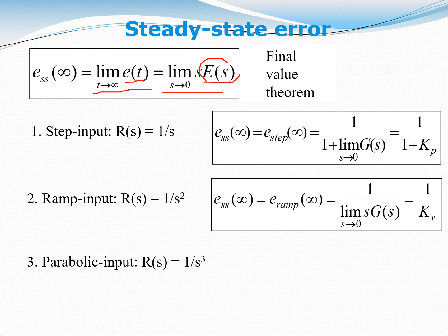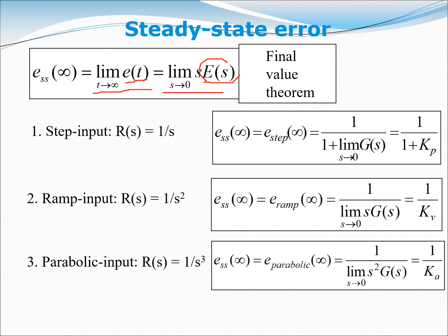For the ramp input, the steady state error formula is e_ss equals one over Kv, where Kv equals the limit as s goes to zero of s·G(s). For the parabolic input, R(s) equals one over s cubed, and the steady state error is one over Ka, where Ka equals the limit as s goes to zero of s squared times G(s). You can memorize these three formulas for the three types of inputs.